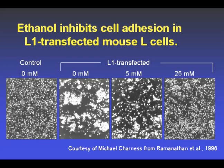Scientists recently recognized that children born with L1 mutations exhibit mental retardation, spastic gait, and a variety of brain malformations including enlarged ventricles — which is hydrocephalus — and agenesis of the corpus callosum. Noting that retardation, hydrocephalus, and agenesis of the corpus callosum also occur in FAS, Michael Charnas and colleagues asked whether alcohol inhibits the adhesiveness of cells bearing the L1 molecule.